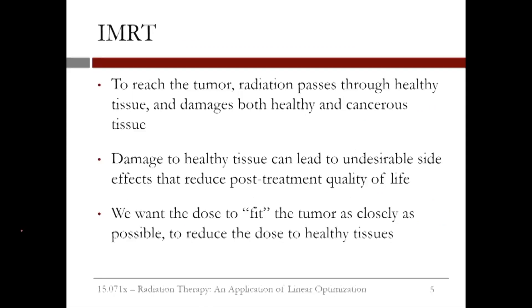The invention of IMRT significantly improved the ability of radiation therapy to target cancerous cells. To reach the tumor, radiation passes through healthy tissue, and therefore damages both healthy and cancerous tissue. This damage to healthy tissue can lead to undesirable side effects that reduce post-treatment quality of life — for example, blistering and burning of skin. For this reason, we want the dose to fit the tumor as closely as possible, which became possible with the invention of IMRT.